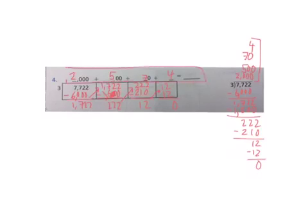So our last step is to add up our partial quotients. You can do that here sideways or you can do that vertically over here.